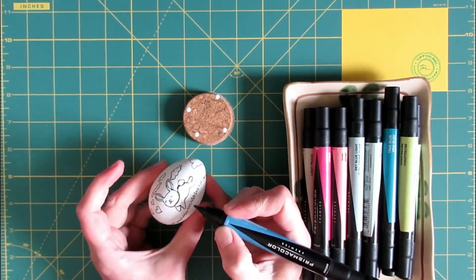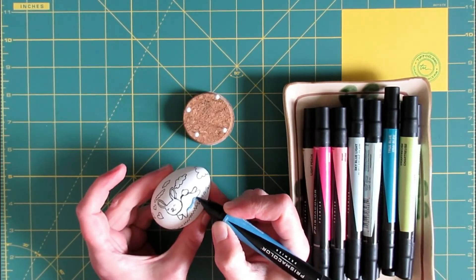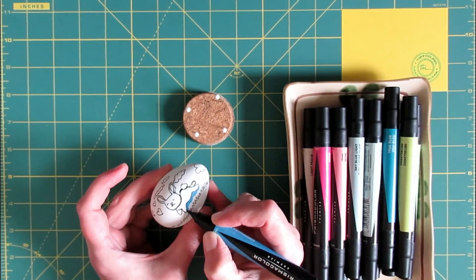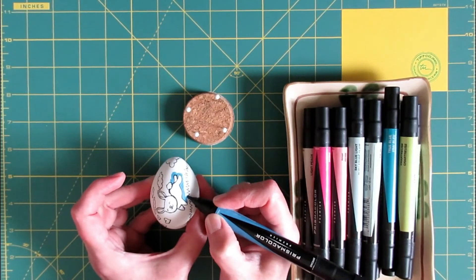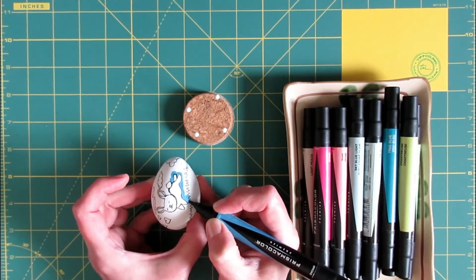Just be careful as you color. Take time to let colors dry before holding the egg by that spot. Or you'll smear the colors and then you'll have to play it off like you were going for a tie-dye effect.